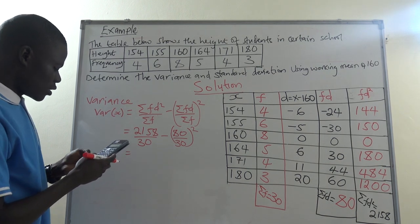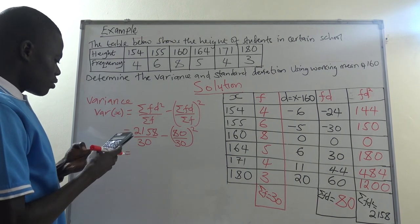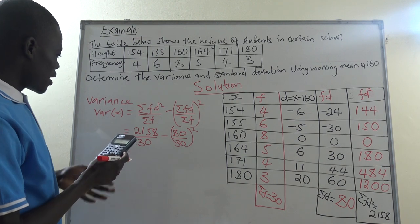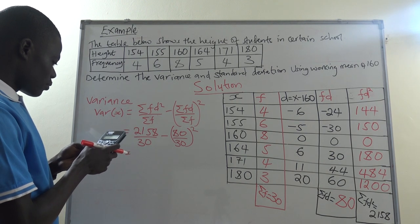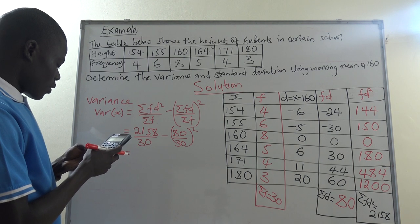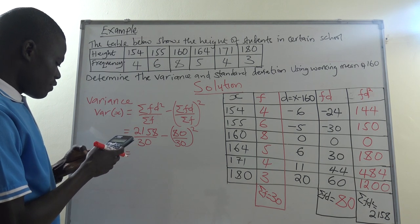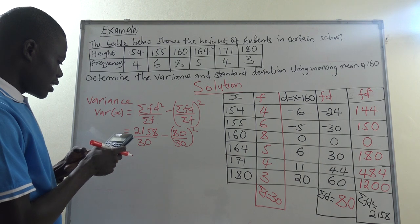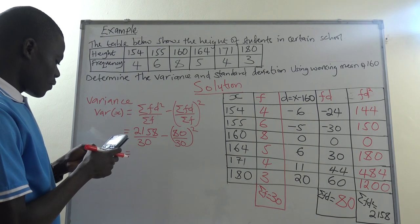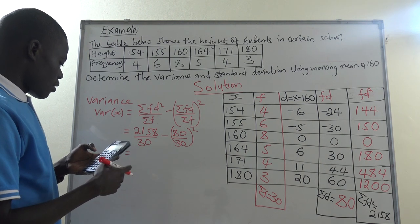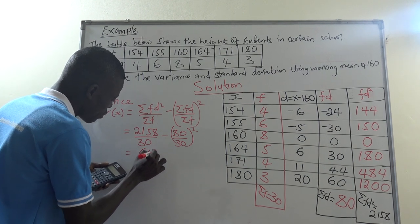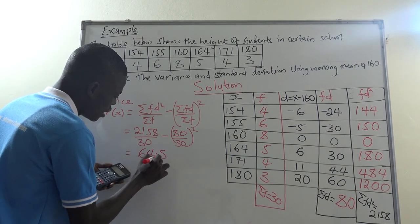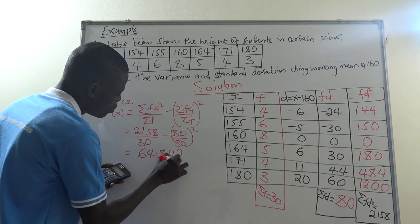So just put it on calculator and get the answer. Then 80 divided by 30. So the answer is giving us about 64.8222 recurring.